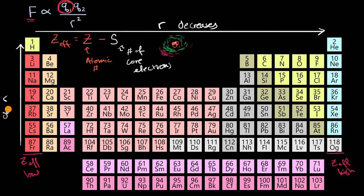Overall, the trend in the periodic table is that radius decreases as you go up and to the right — you could draw an arrow in that direction. By most measures, helium is considered to be the smallest neutral atom, and francium is considered to be the largest.